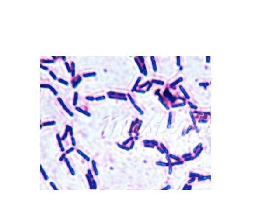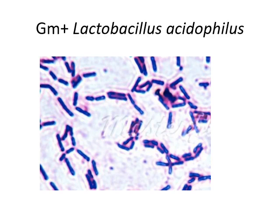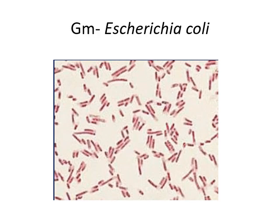These are gram positive bacteria — Lactobacillus acidophilus — a gram positive bacillus found in the vagina and used to ferment yogurt. These next ones are not dark purple but pink, so gram negative. This is Escherichia coli — E. coli is a gram negative bacillus.